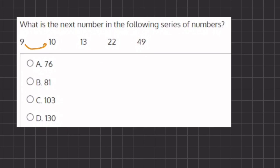So the shift between 9 and 10 seems like it's being added by 1. And if we transition from 10 to 13, it seems like we are adding 3.